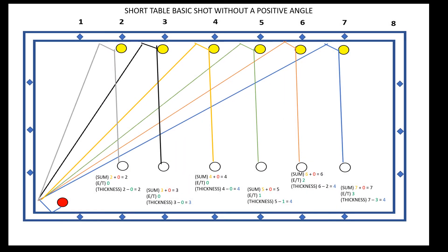When calculating for a short table without a positive angle, your English will be zero for all diamonds up to 4.